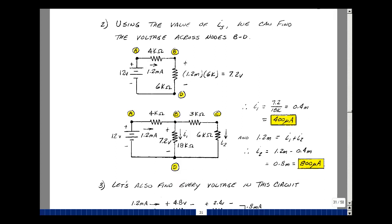Now let's go back to the original drawing. This is 1.2 milliamps, and the voltage across here is 7.2 volts. All right, the current that's flowing in here then, just by Ohm's law, would be 7.2 volts divided by 18k, and that turns out to be 0.4 milliamps.